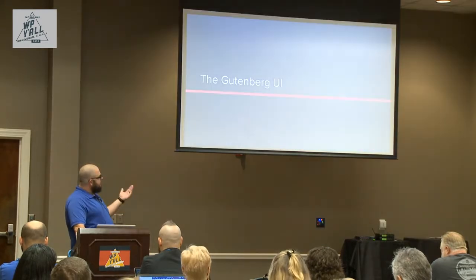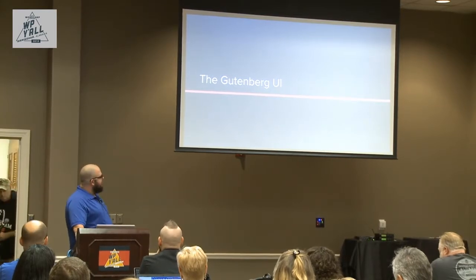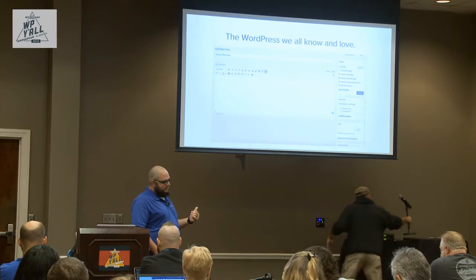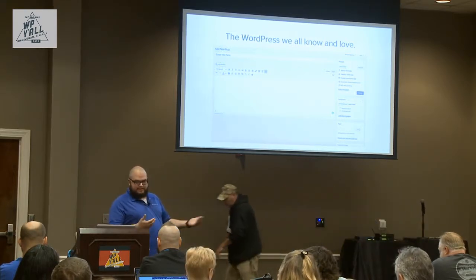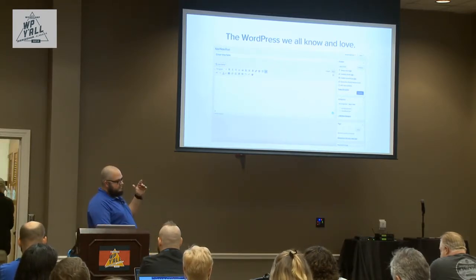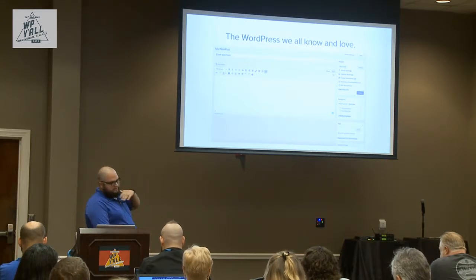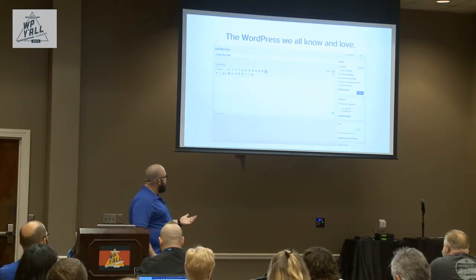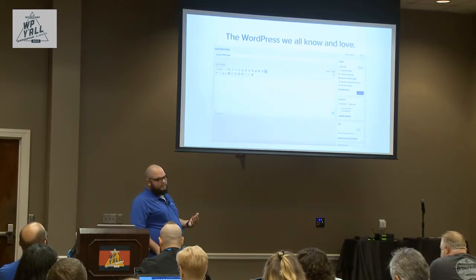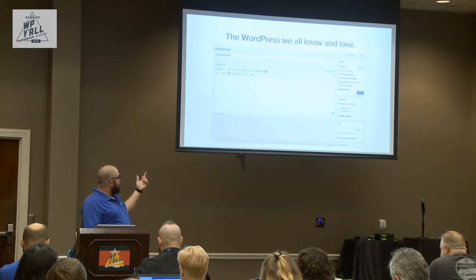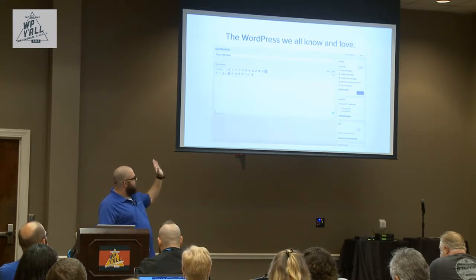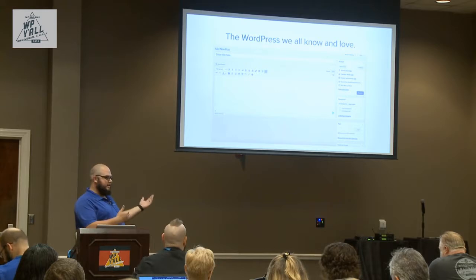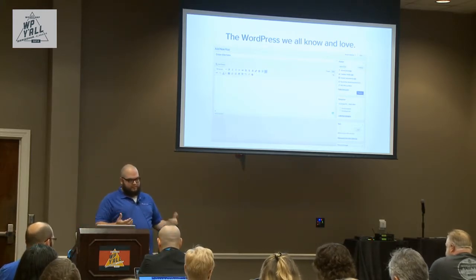The first thing we'll look at is the Gutenberg UI. This is what is now being dubbed the classic editor — because post-Gutenberg, we have two things: the classic editor and the Gutenberg editor. You've got your post title field at the top, content area below that with formatting buttons and add media. Over on the right you've got your publish box, categories, tags, and featured image. If you have plugins enabled you'll likely have other boxes too. We're all familiar with it.